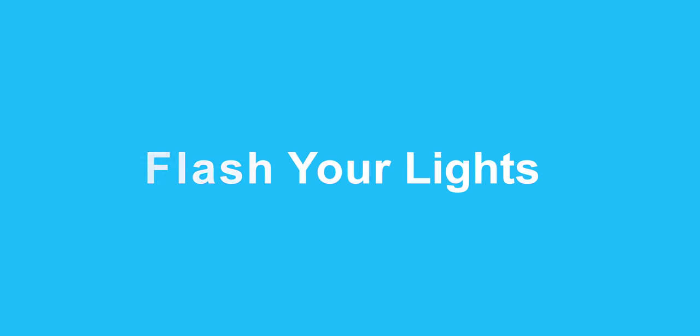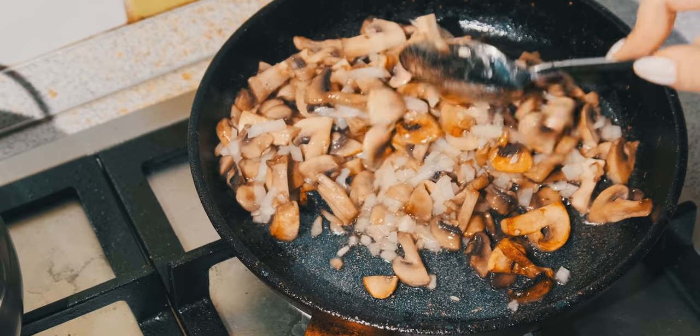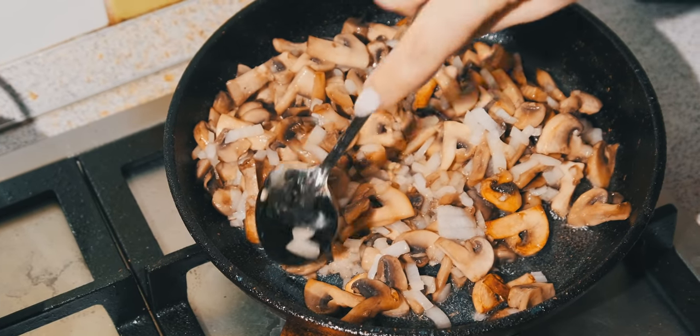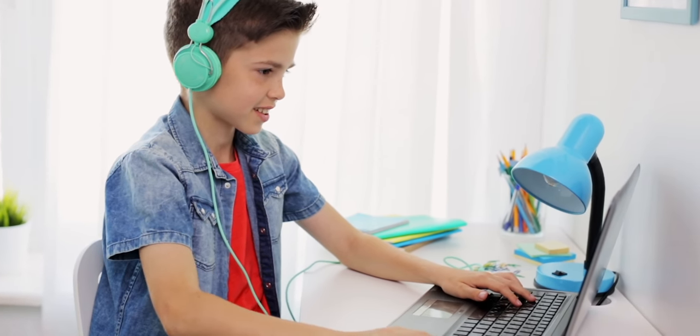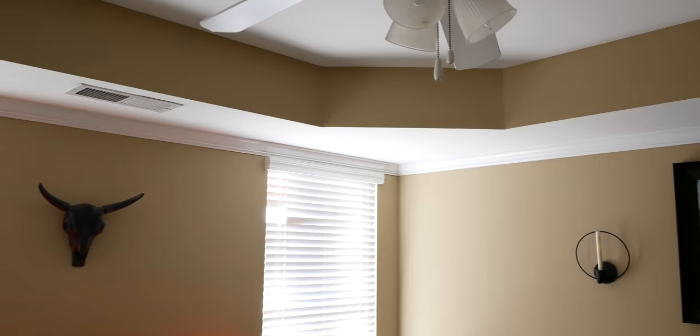Number two: flash your HomeKit lights with your HomePod. Here's the scenario — let's say you have a larger house and your kids are in their bedrooms and your spouse is in another room, and you're in the kitchen ready for everyone to come down and eat dinner. You can use the awesome intercom feature on the HomePod to announce a message, but maybe your kids have headphones in and don't hear it. So we can create a shortcut that will flash the lights in different bedrooms to notify everyone it's time for dinner.